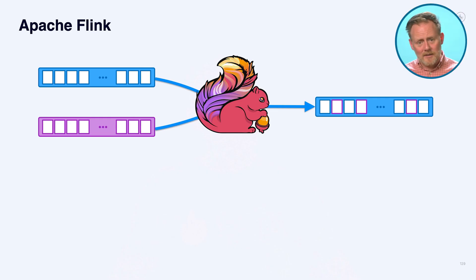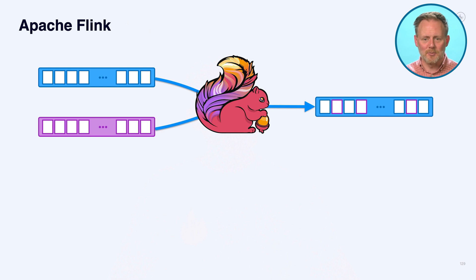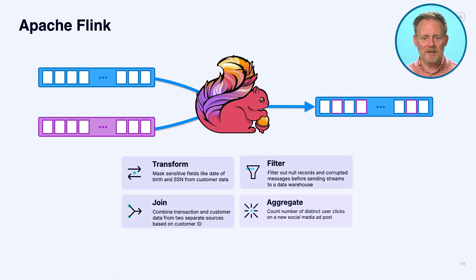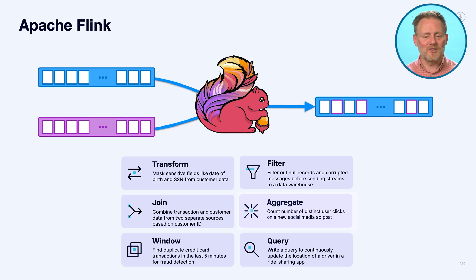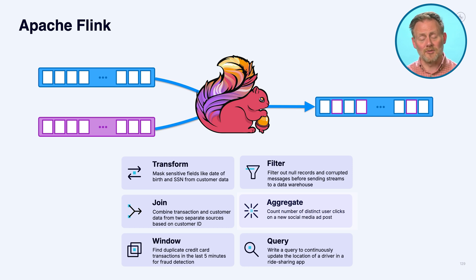We're leaving the Kafka universe proper a little bit here — halfway. We're going to talk about two options: Apache Flink and Kafka Streams. Flink has become a de facto standard way of doing stream processing on Kafka. It's got all the core computational primitives of stream processing — transforming, filtering, joining, aggregating — without requiring you to write extensive framework code.